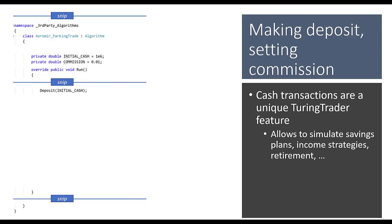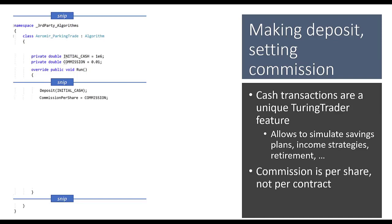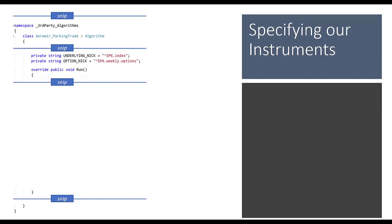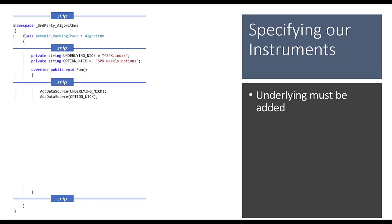Set commission with another field — one cent per share, which is one dollar per lot. Note that commission is per share, not per contract lot. Then specify instruments, defined by nicknames. We need the SPX index and the SPX option chain, each brought in with a single statement. We must add the underlying manually; without it the simulator won't know how to expire options. Bringing in the whole option chain with one line of code is different from other simulators — the one data source can create 50,000 option contracts.